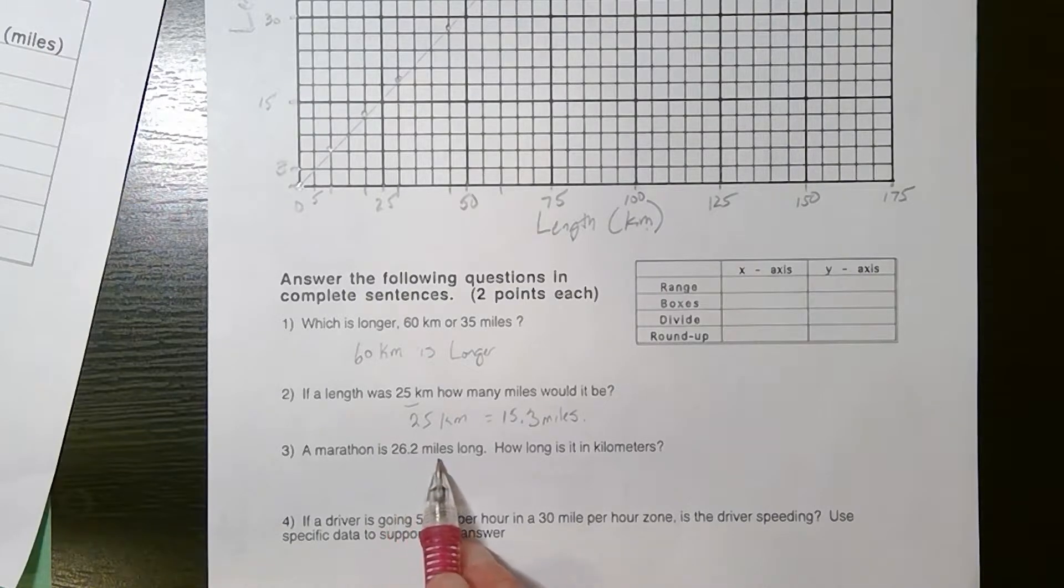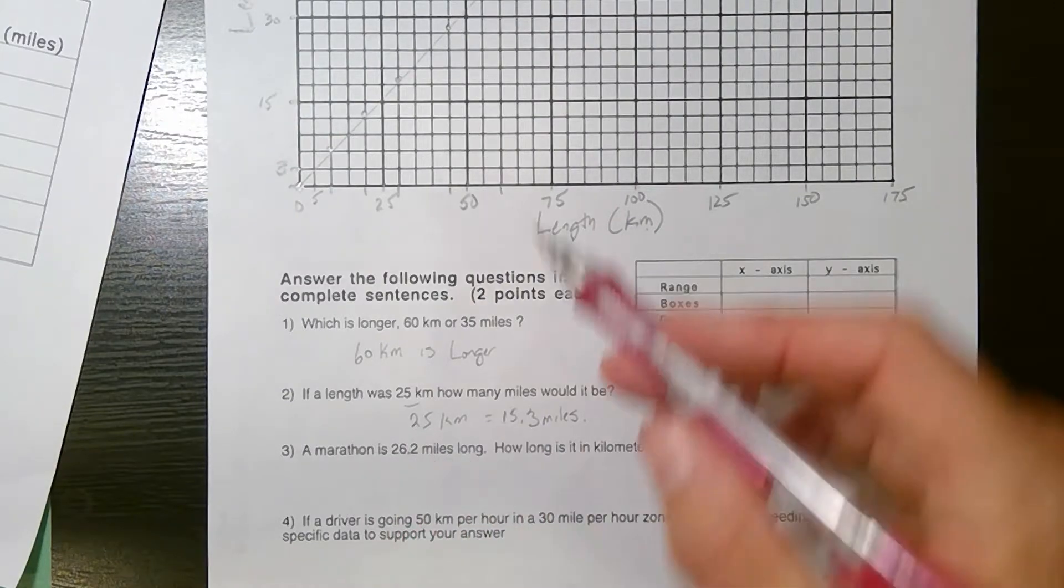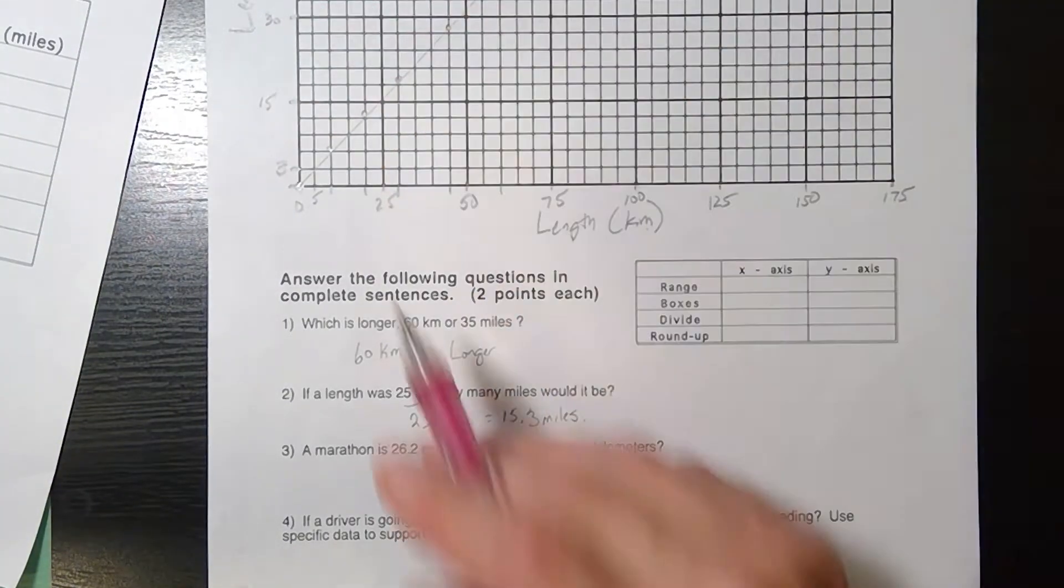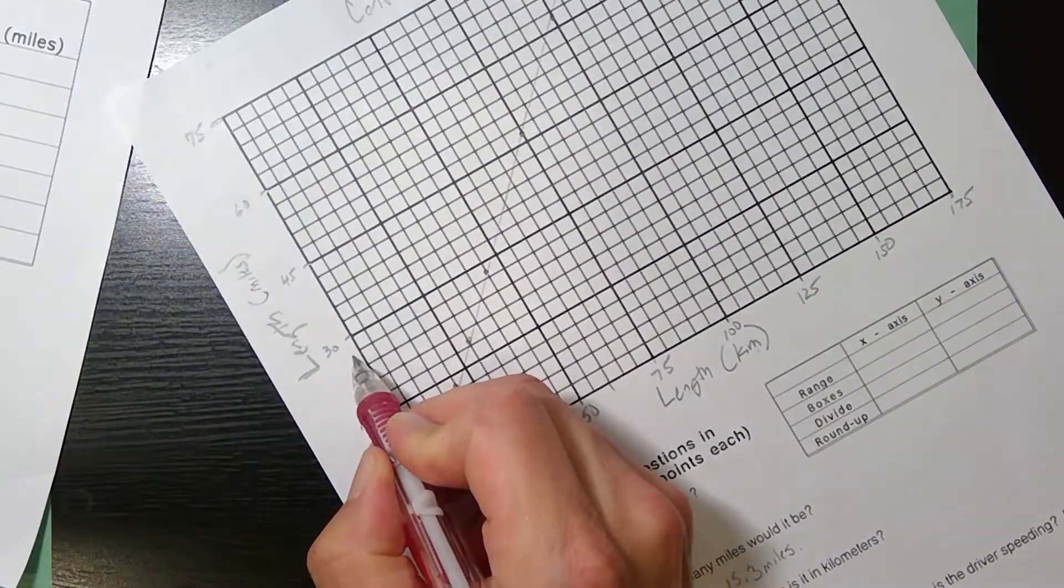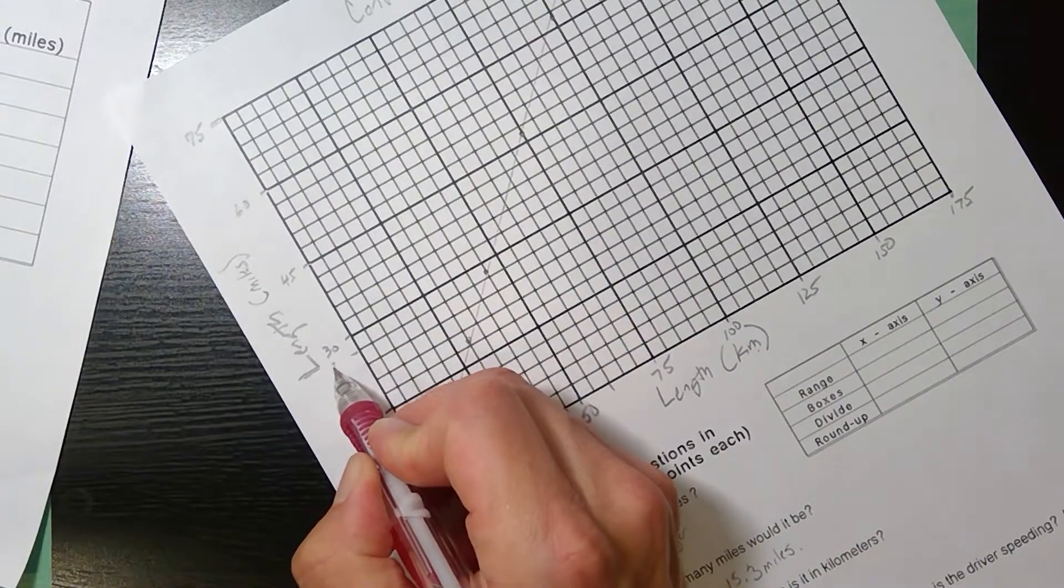26.2 miles is a marathon. So now I'm given the miles. Miles is on this scale. It's going by threes. So this would be 27. This would be 24. So 26 is going to be just below 27.